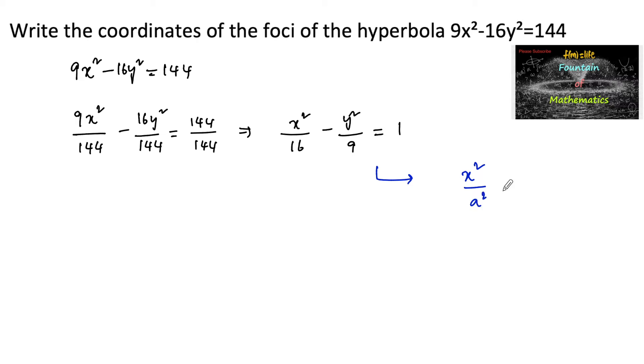This is in the form x²/a² - y²/b² = 1, where a² is greater than b². The foci of this hyperbola are at (±ae, 0), where eccentricity e equals √(1 + b²/a²).